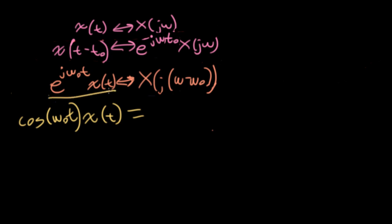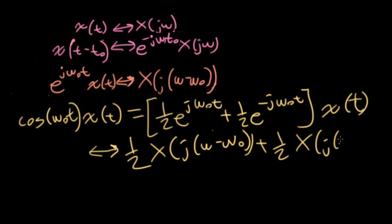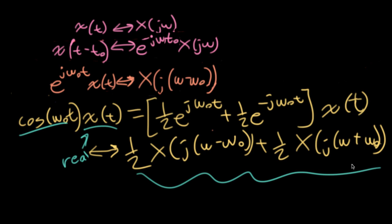So I'll write this as one half e to the plus j omega nought t plus one half e to the minus j omega nought t, all times x(t). So we can use this property here to say that this is going to transform into one half big X(j(omega minus omega nought)) plus one half big X(j(omega plus omega nought)). Here we're shifting big X to the right on the frequency axis, and here we're shifting it to the left on the frequency axis. So assuming that x is real, multiplying it by this cosine will still have a real function.